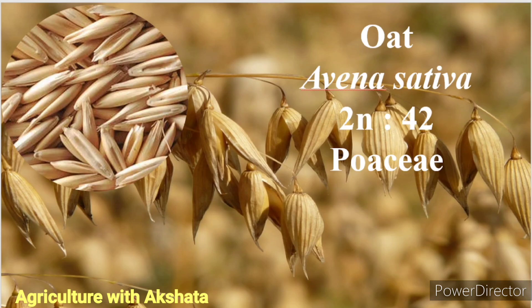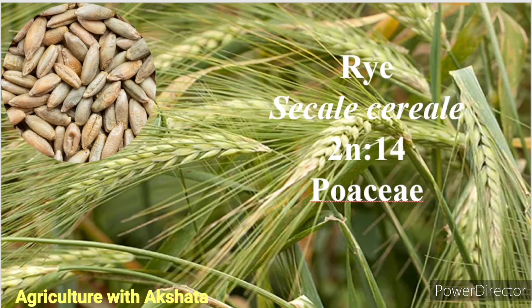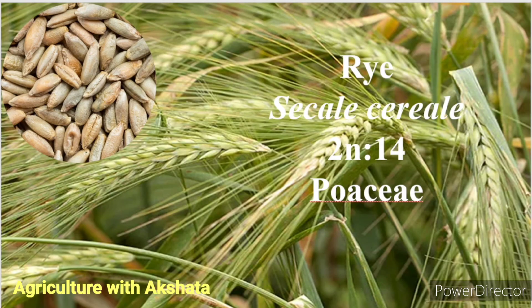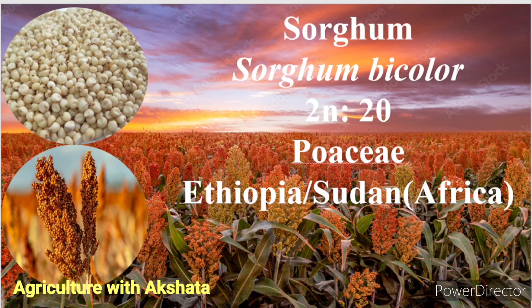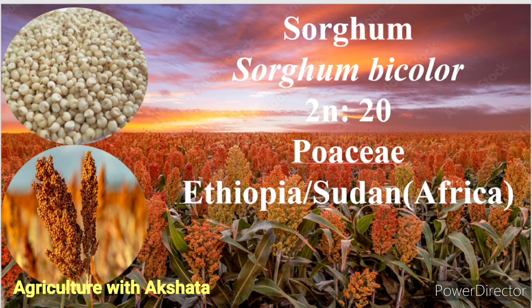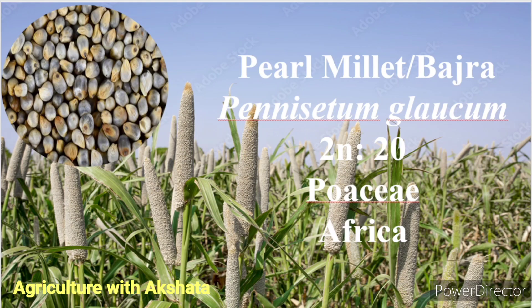Oat: Avena sativa, 2n = 42, Poaceae family. Rye: Secale cereale, 2n = 14, Poaceae family. Sorghum: Sorghum bicolor, 2n = 20, Poaceae family, origin Ethiopia, Sudan or Africa. Pearl millet also called Bajra: Pennisetum glaucum or Pennisetum typhoides, 2n = 20, Poaceae family, origin Africa.